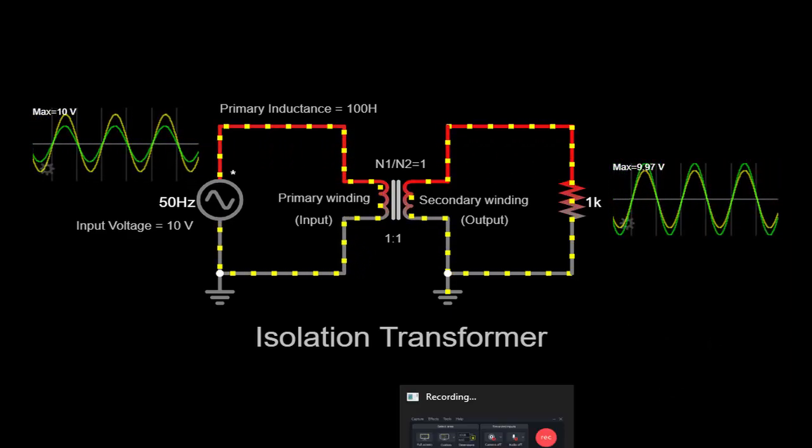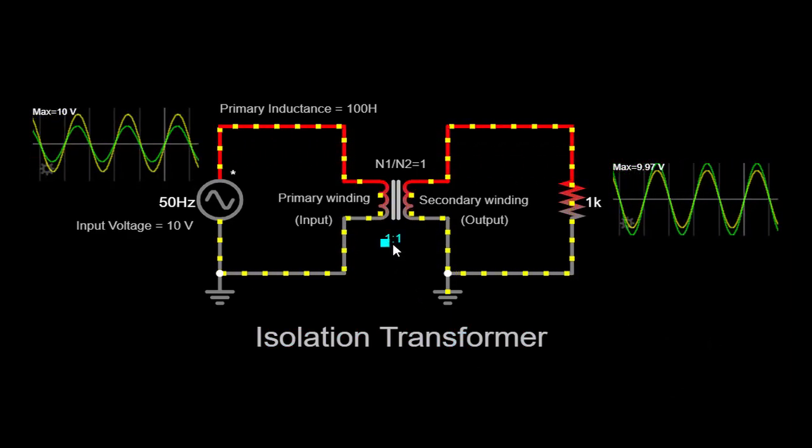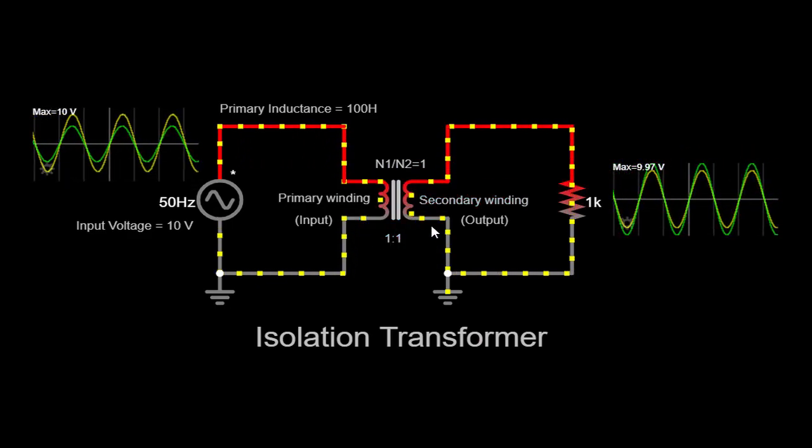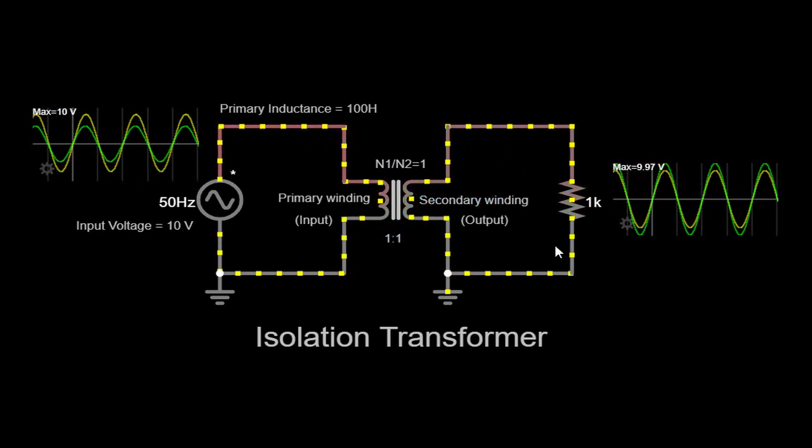The turns ratio determines the voltage step-up or step-down capability of the isolation transformer. In our scenario, since the turns ratio is 1, the output voltage remains close to the input voltage, with a slight reduction due to losses in the transformer.